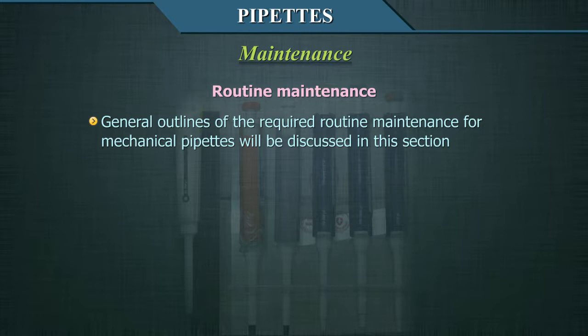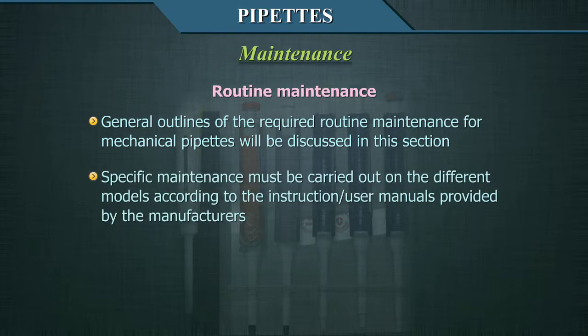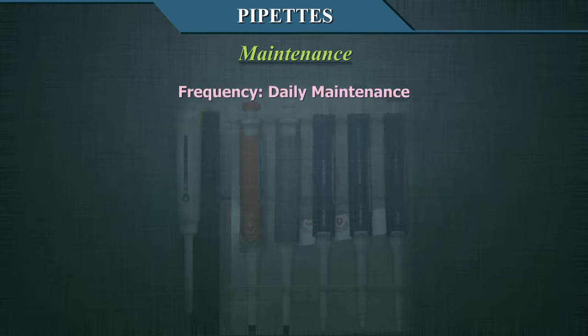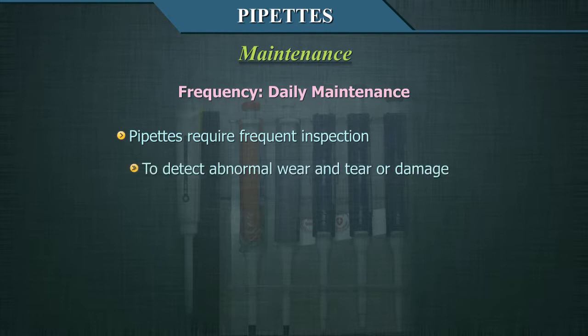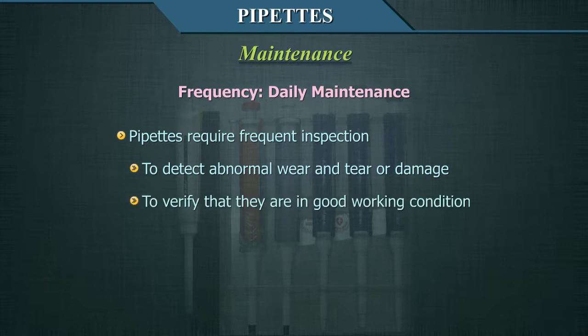Maintenance: general outlines of the required routine maintenance for mechanical pipettes will be discussed here. Specific maintenance must be carried out on the different models according to the instruction manual provided by the manufacturer. Daily maintenance requires frequent inspection in order to detect abnormal wear and tear or damage, and to verify that the pipettes are in good working condition.